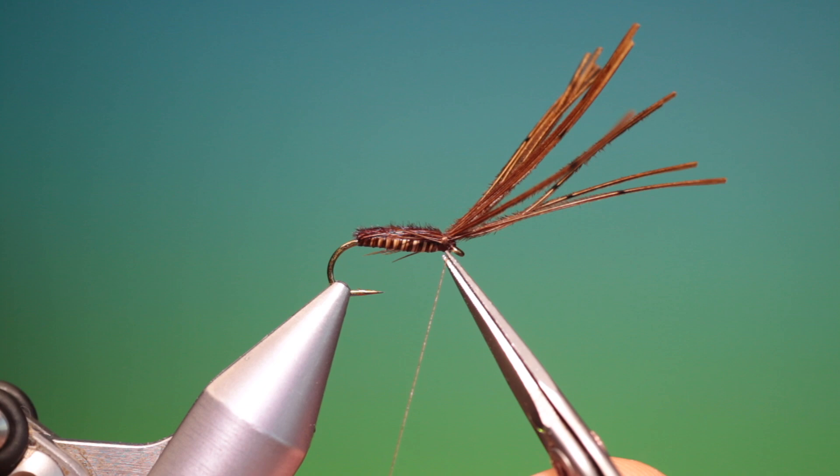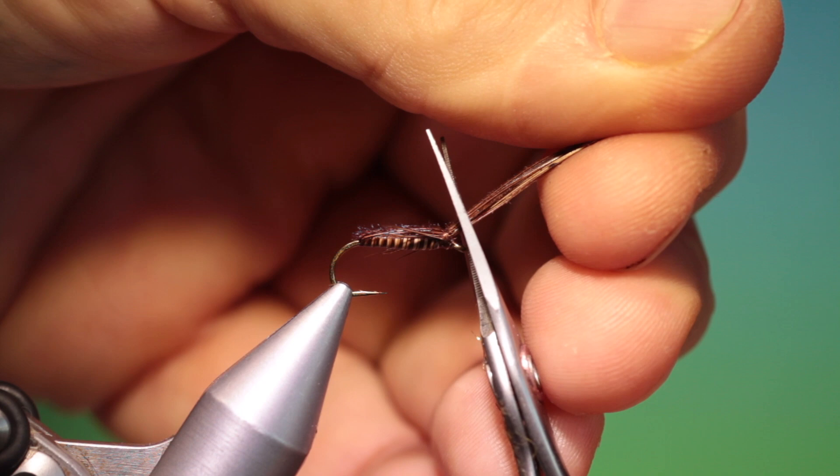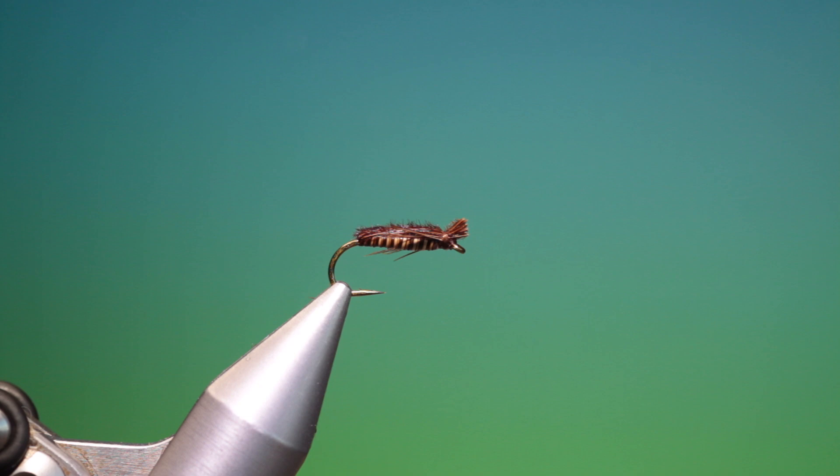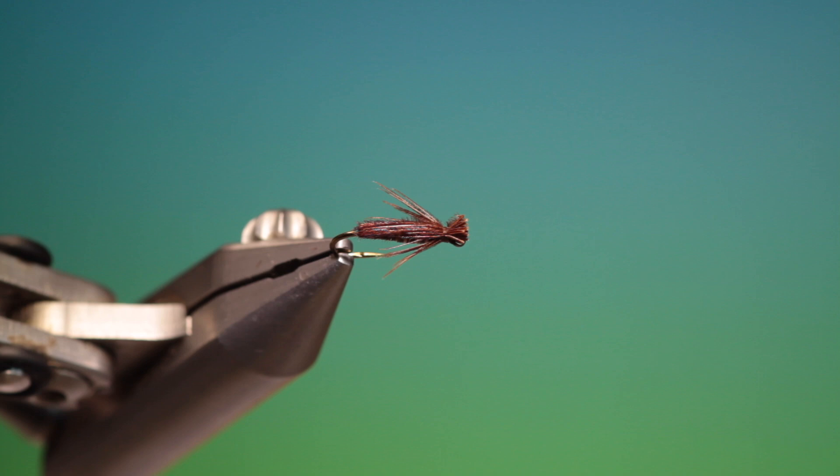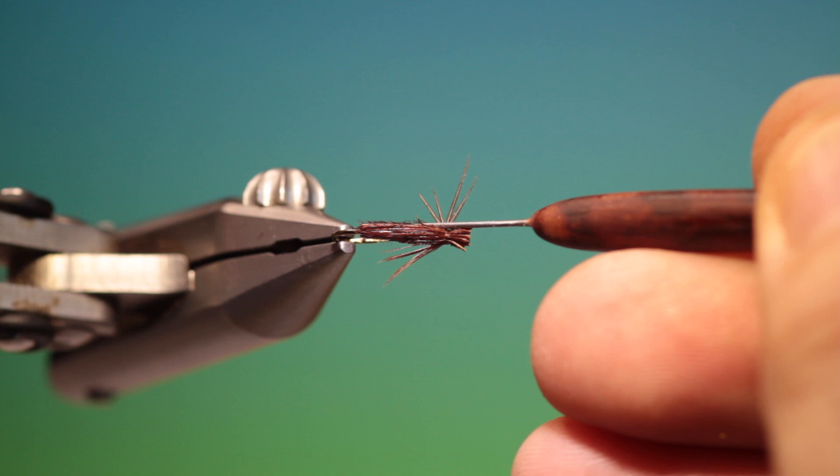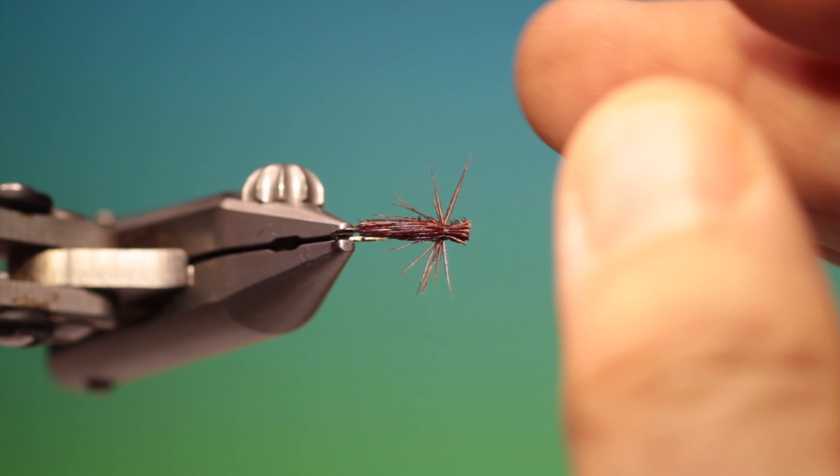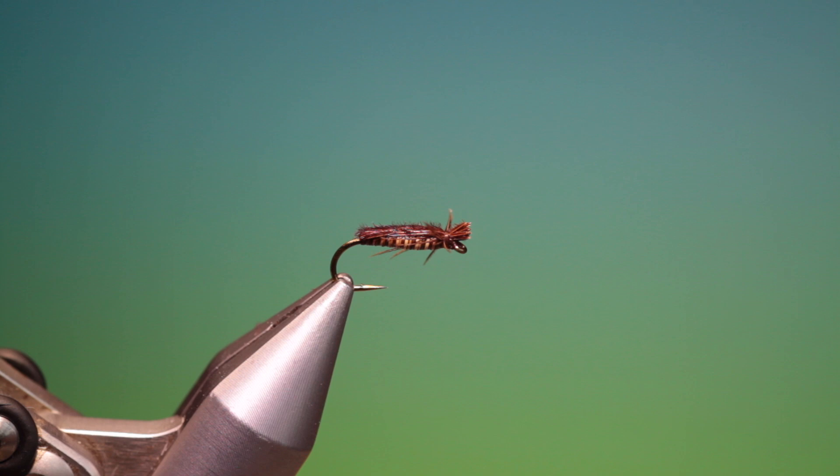Remove that and rest your scissors on the hook eye, a little head like that. And turn it around and just pull the legs out. That's looking good.